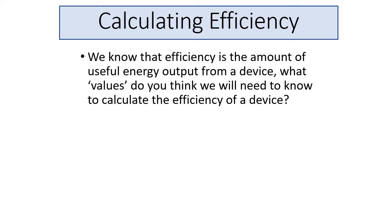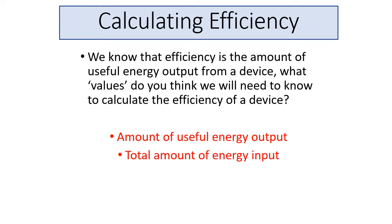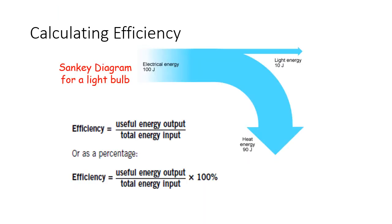Efficiency is very important to calculate. Efficiency is the amount of useful energy output from the device. The values we need to know are: the amount of useful energy output, and the total amount of energy input — how much energy is being transferred into useful energy. We do not consider the wasted energy here. This is shown in the Sankey diagram.